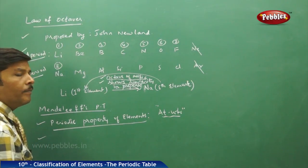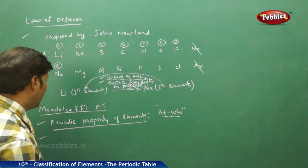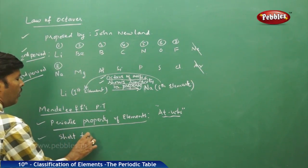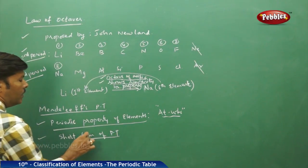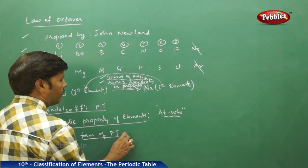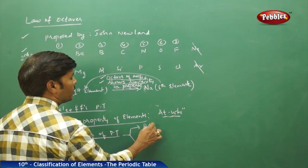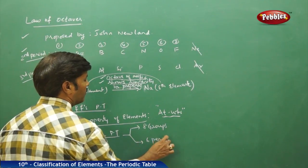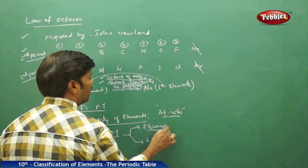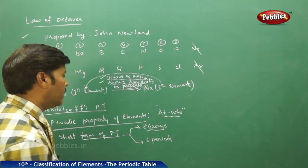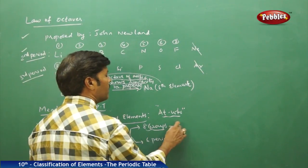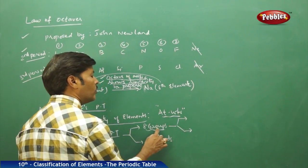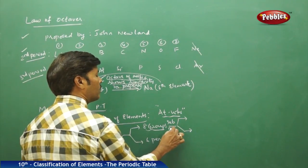Mendeleev's periodic table is also called the short form of the periodic table. It is made up of eight groups and six periods. Mendeleev could successfully give a sub-classification; it used to have subgroups — eight main groups with subgroups as well.